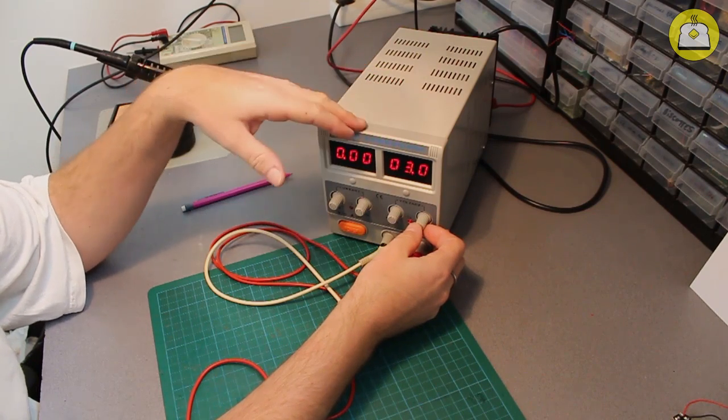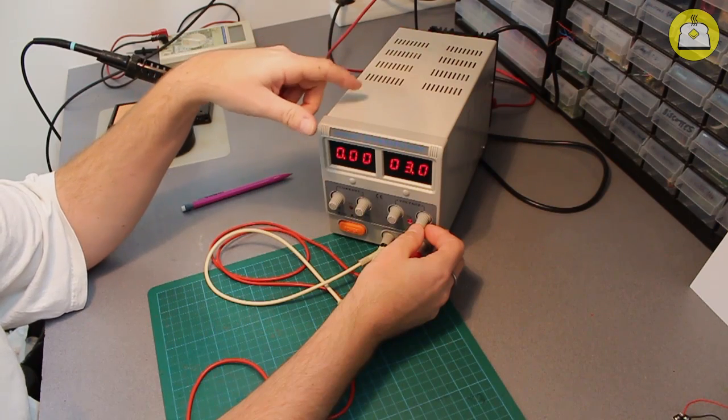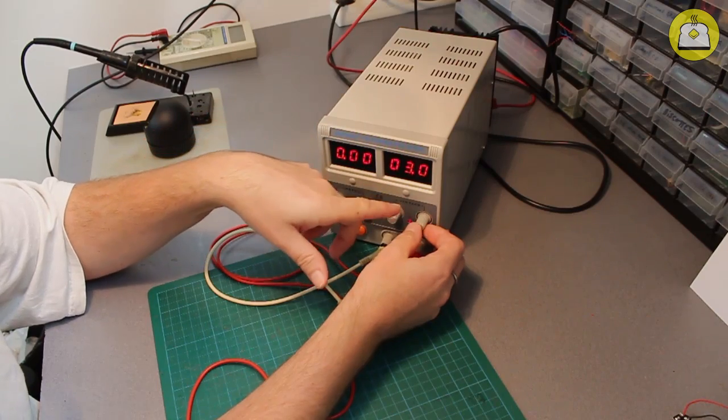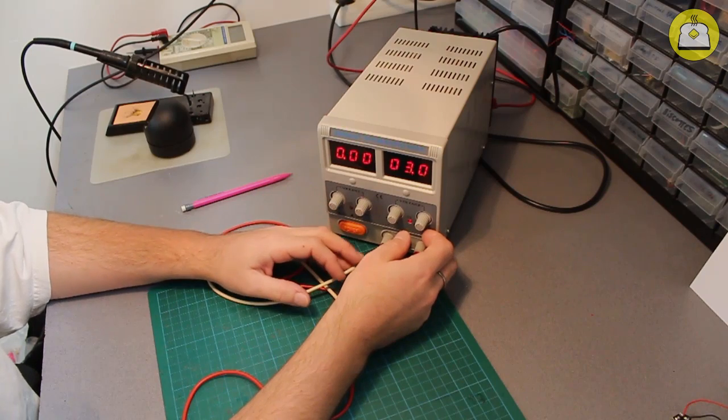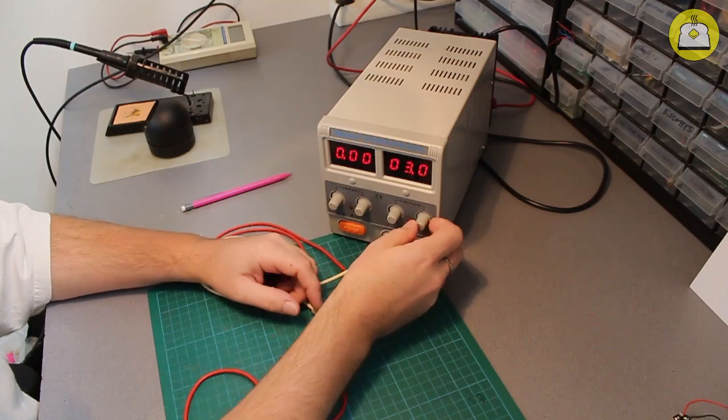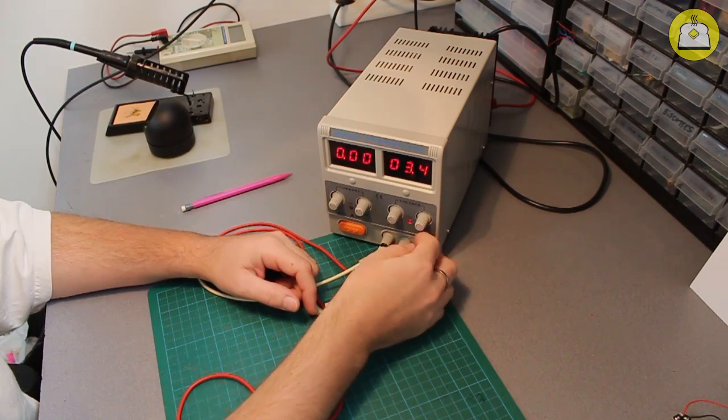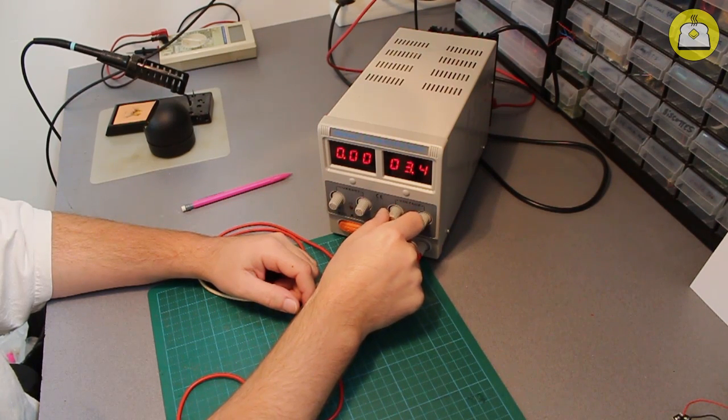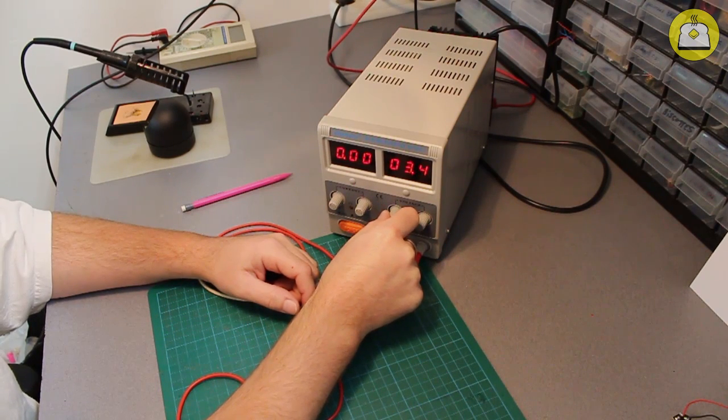Which means that whatever the current that is taken out from here, if it's below the limit, the voltage will remain stable regardless the amount of current that is taken out from the power supply. This particular power supply has two knobs for setting the voltage. One is the coarse as it's indicated here, the other one is the fine tuning. The fine tuning has about 0.5 volts of range which makes it very handy to have a very precise adjustment.